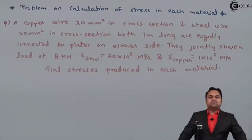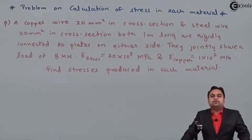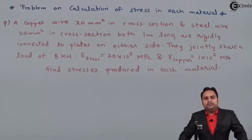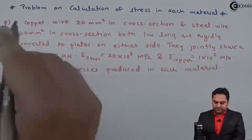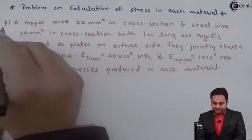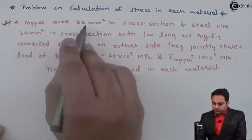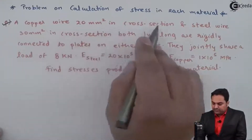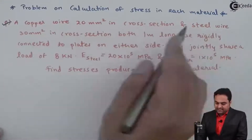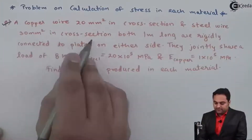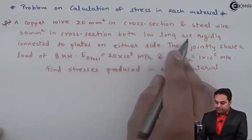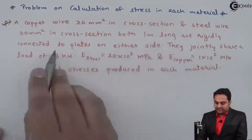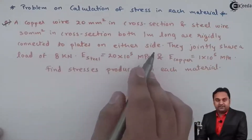Hello friends, here in this video we will see a problem on calculation of stress in each material. A copper wire 20 mm square in cross-section and a steel wire 30 mm square in cross-section, both 1 meter long, are rigidly connected to plates on either side.